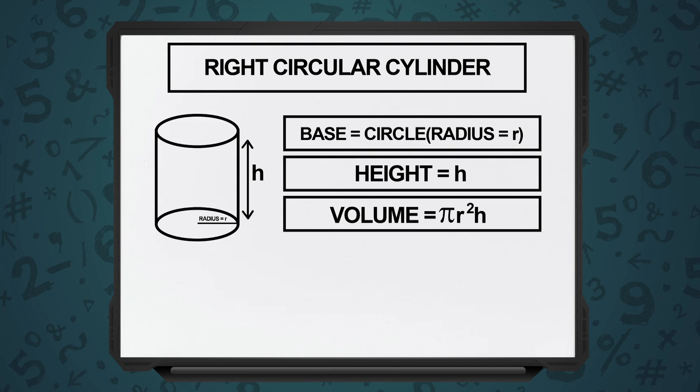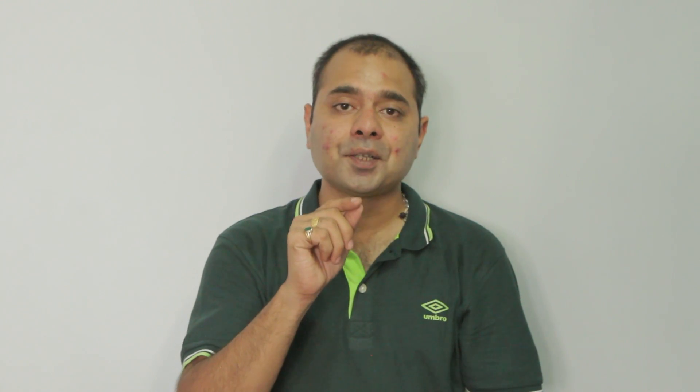Let us say the height is h for this right circular cylinder. Then the volume of the right circular cylinder will become pi r square h, coming to surface area specifically in right circular cylinders and right circular cones.